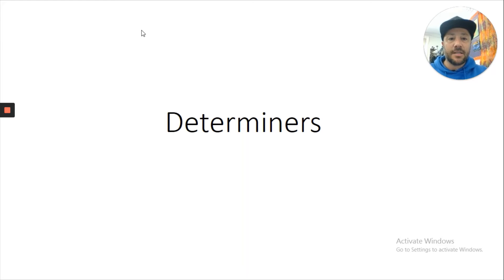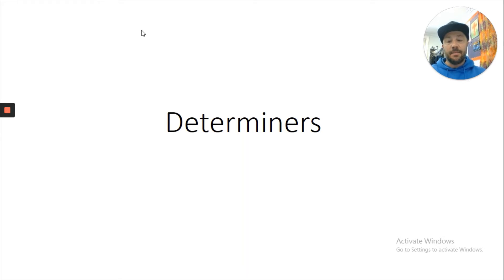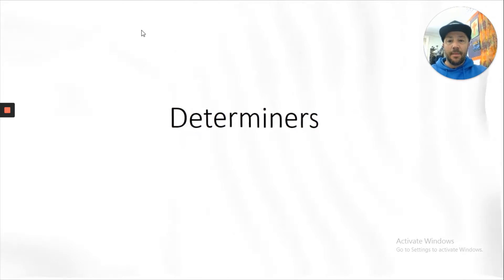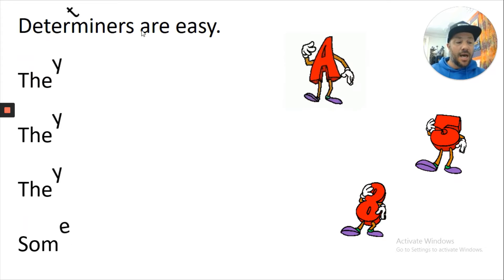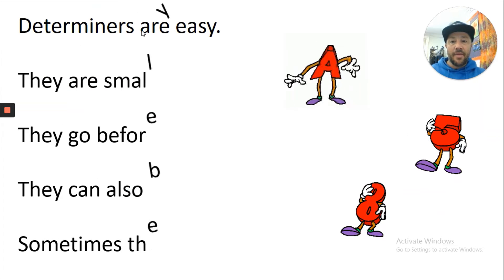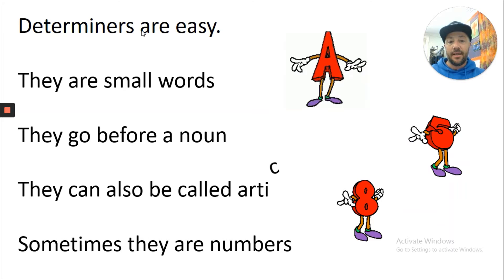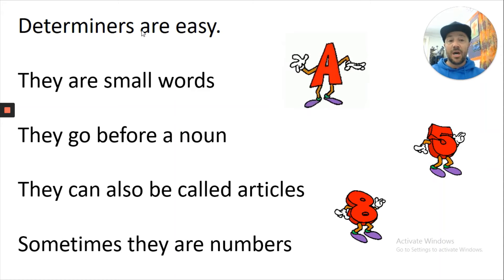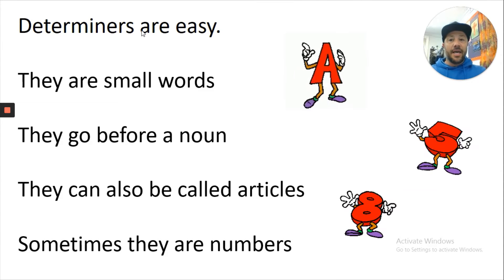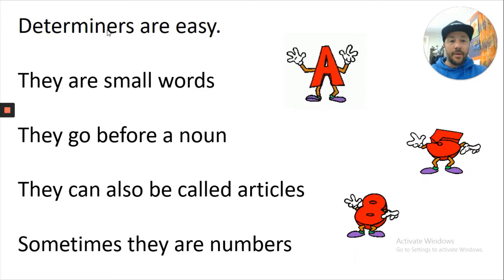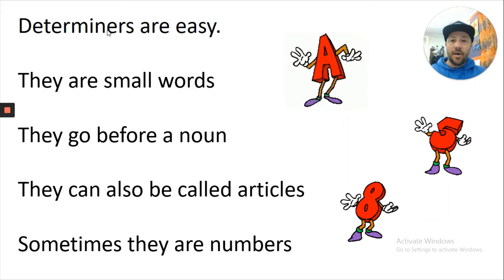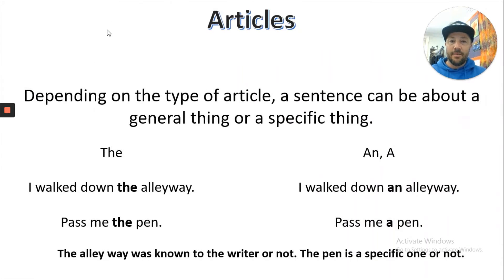Hi guys, we've got a SPAG lesson today — first in a number of SPAG lessons I'm going to be putting out. It's going to have some challenges and things to do, but ultimately it's going to help you understand spelling, punctuation and grammar. What we're going to do today is talk about determiners. Determiners are pretty easy — they are small words that go before a noun. They can also be numbers and can be called articles.